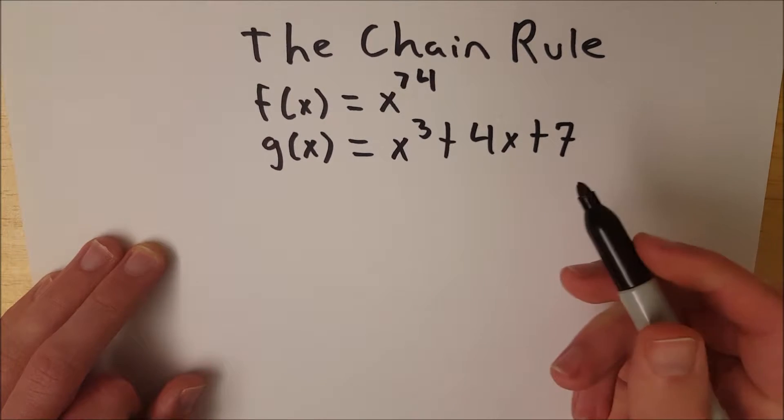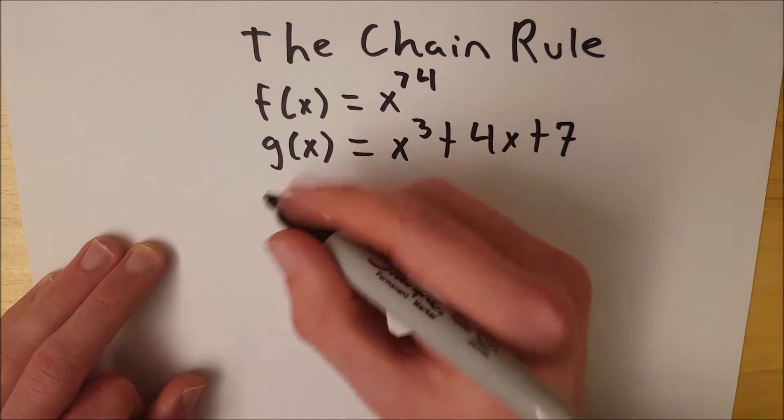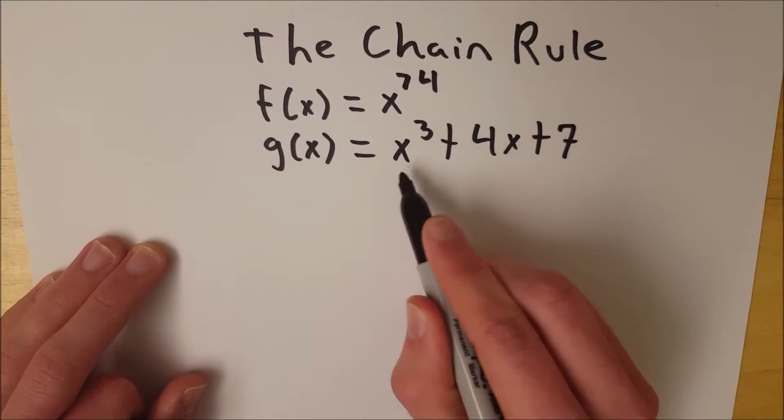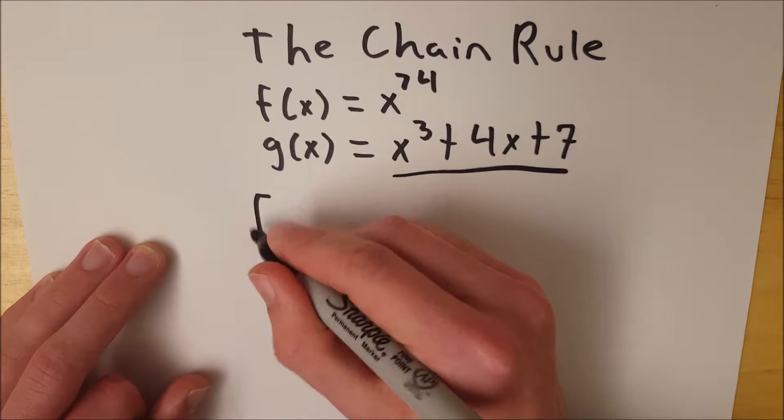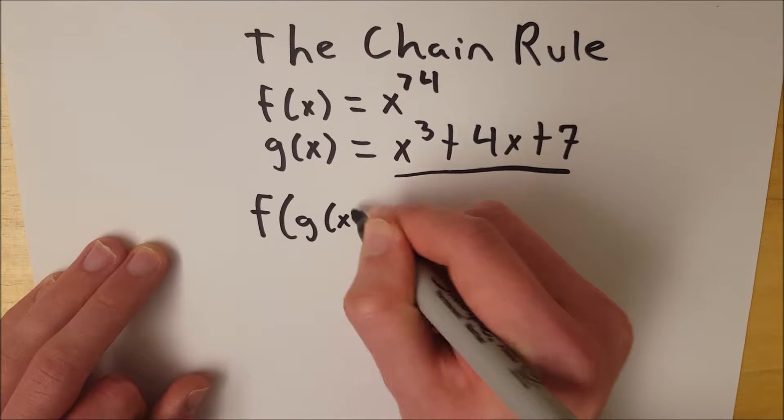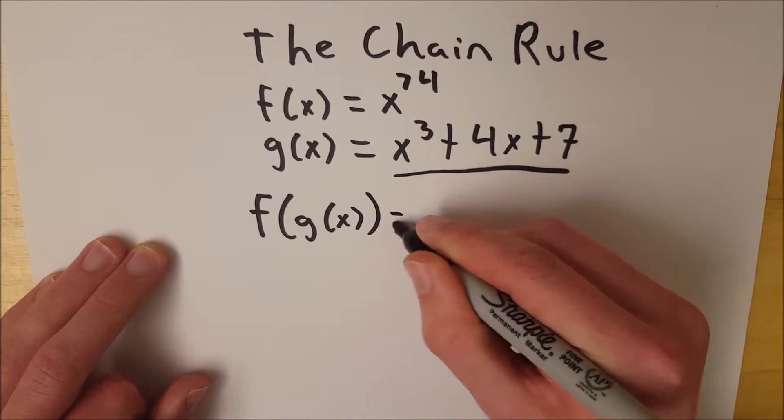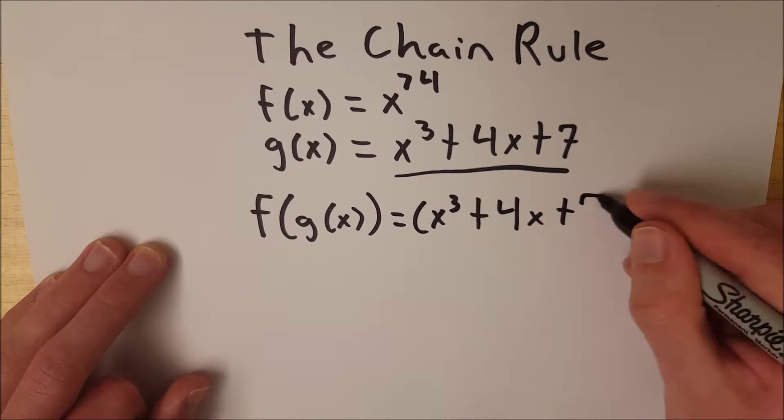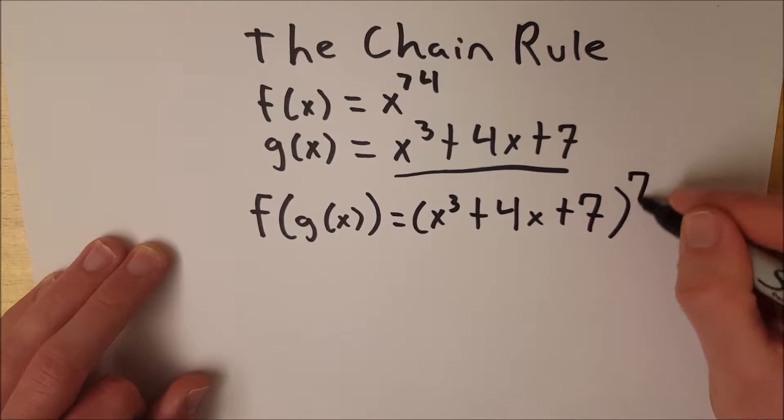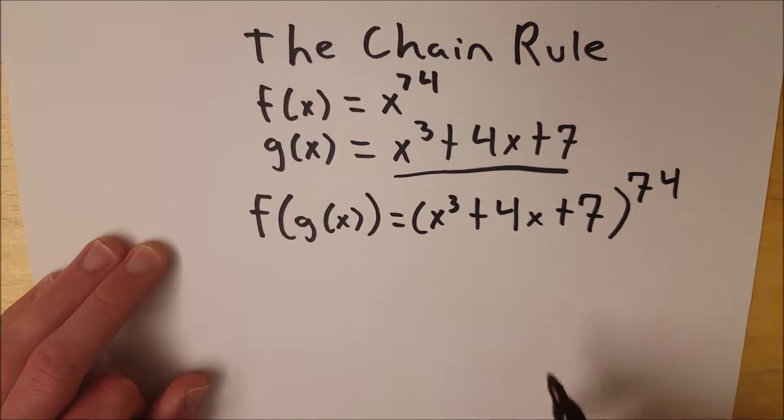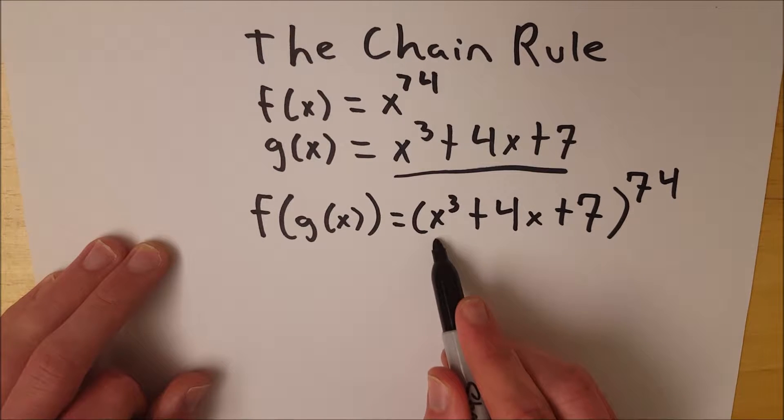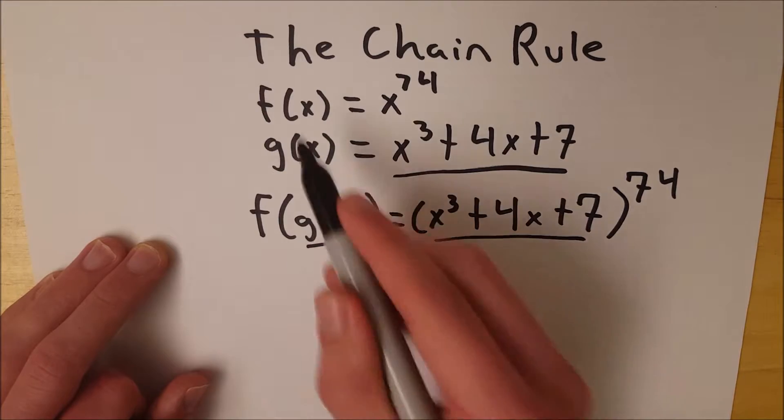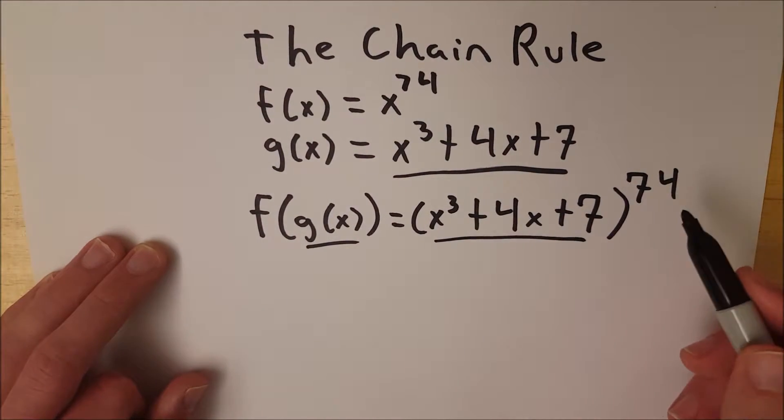We could take the derivative of that polynomial easily as well, but let's say we had a composite function. So instead of just an x here we actually had this function g of x, so that would be f of g of x, then we would have x cubed plus 4x plus 7 all to the power of 74. And this is when we need the chain rule. Notice here we have the inside function g of x and then the outside function which is f of x, which is just something to the power of 74.